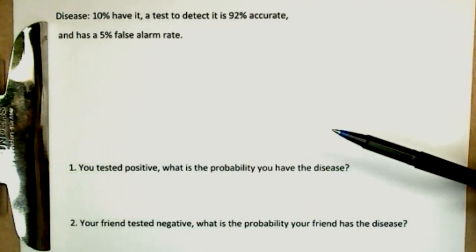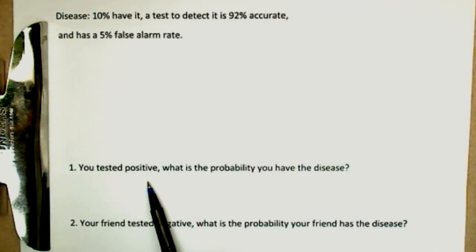So we have two questions that we want to analyze. You tested positive, what is the probability you have the disease? In other cases, your friend tested negative. What is the probability your friend actually has the disease despite his negative test?